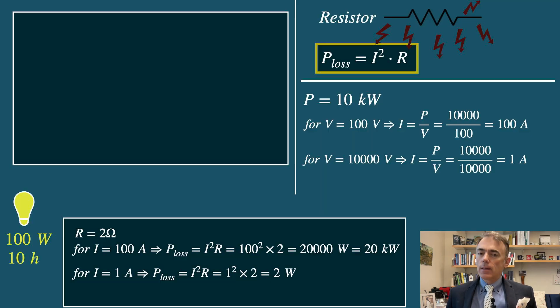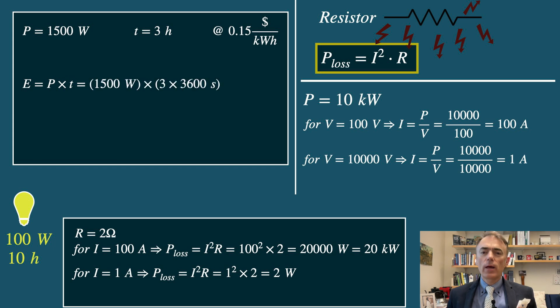Let's look at an example. A 1500 watt electric heater runs for 3 hours. How much energy does it consume and what is the cost of electricity billed at 15 cents per kilowatt hour? For the energy, it's P times T, so it's 1500 watts times 3 hours, which is 4.5 kilowatt hours.